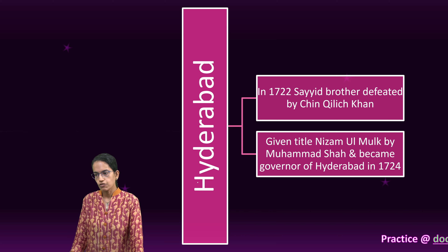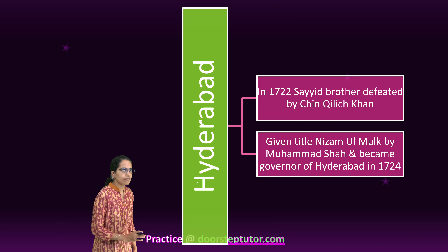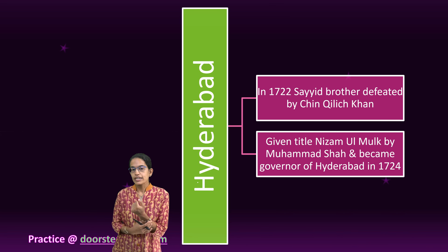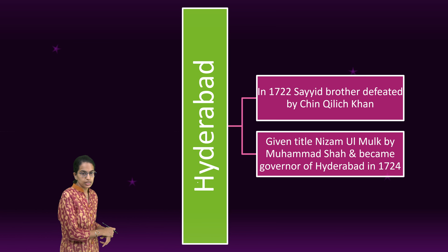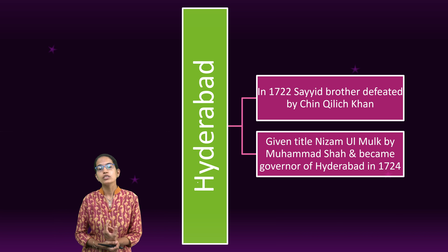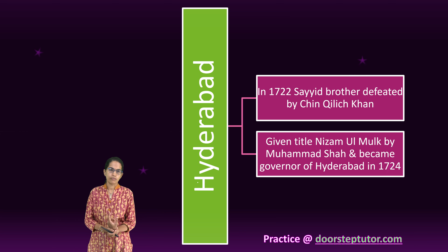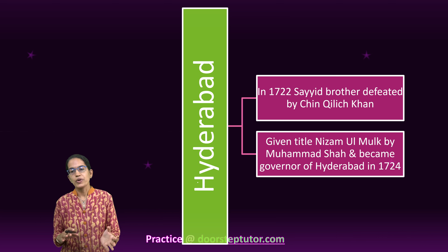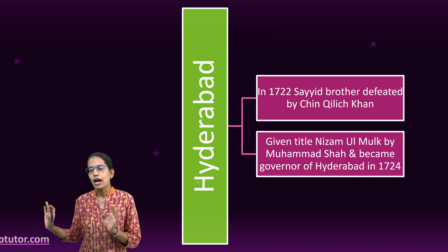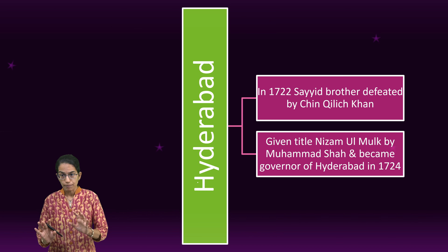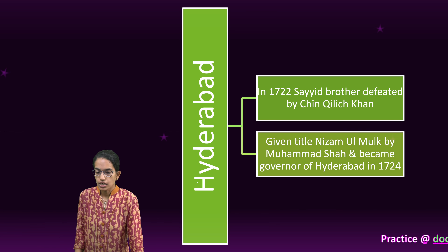The next region is Hyderabad. In the region of Hyderabad, it is important to note that in 1722, the Syed brothers were defeated. Chin Kilij Khan was the main person — he was given the title of Nizam-ul-Mulk by Muhammad Shah and then appointed as the governor. He never publicly declared himself as independent, but he actually acted as an independent ruler.